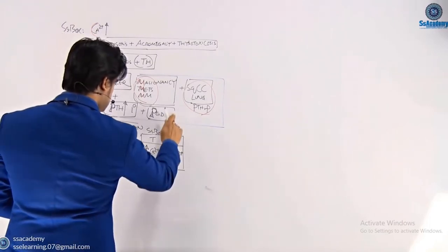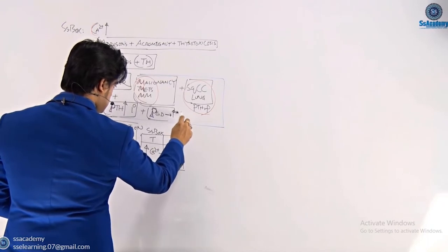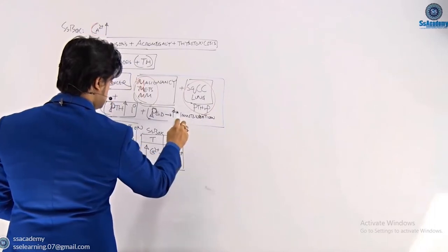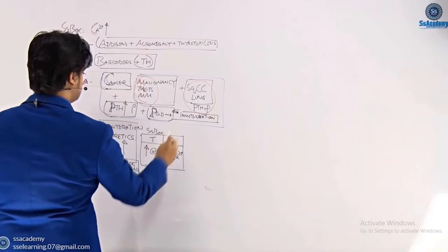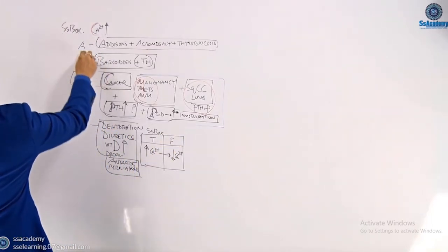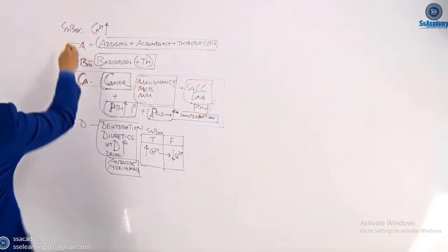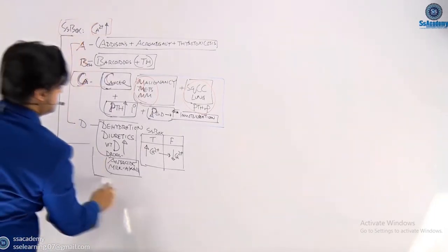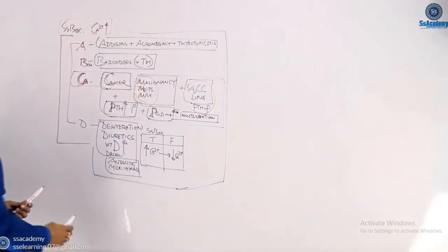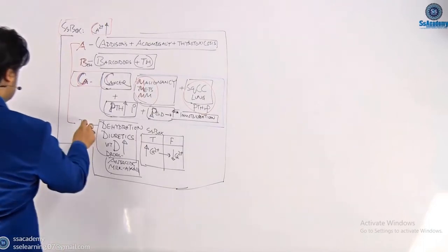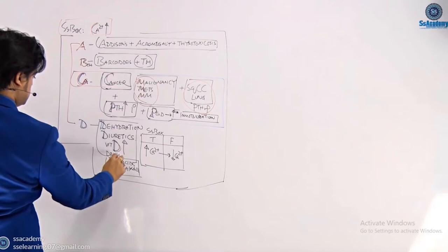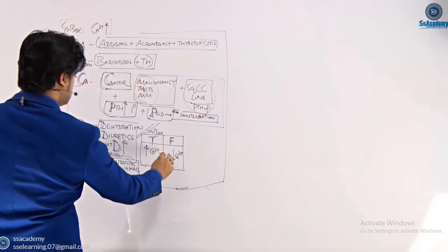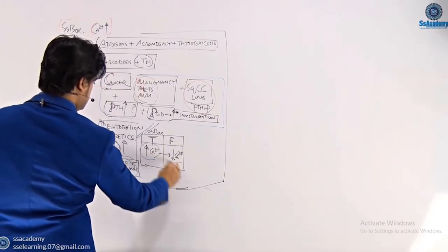In Paget's disease, calcium is increased only in case of immobilization; otherwise calcium is normal. Important comparison: thiazide diuretics cause hypercalcemia, while furosemide causes hypocalcemia. D bundle pack: dehydration, diuretics, vitamin D intoxication, and drugs including antacids. These ABCD mnemonics will be really helpful to remember all causes of hypercalcemia.